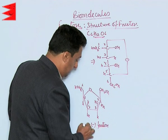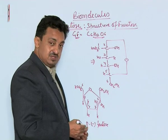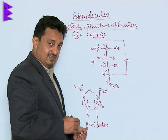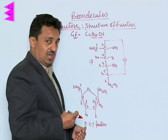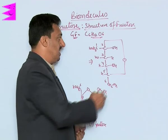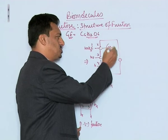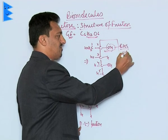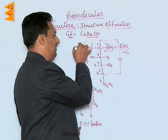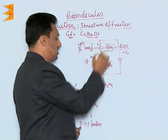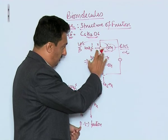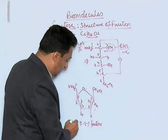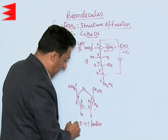This is the relative configuration. Fructose also shows anomerism with respect to the OH group on the second carbon atom. If the OH is on the right-hand side it is called alpha, and if it is on the left-hand side it is called beta. In the furanose structure, if the OH comes downward it is alpha D-minus fructose.